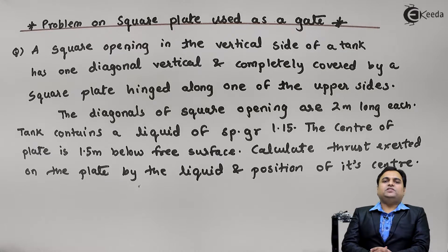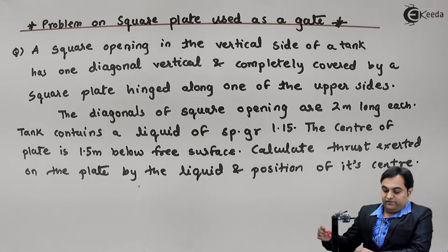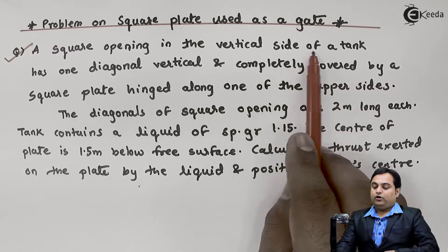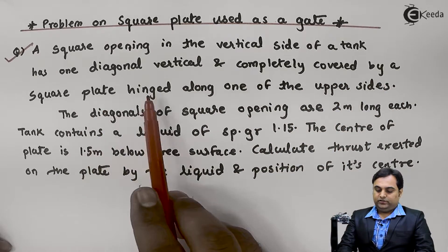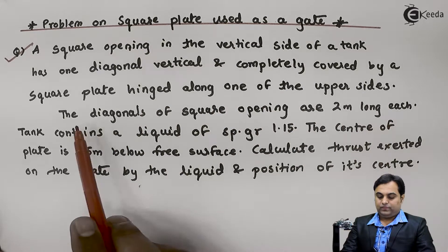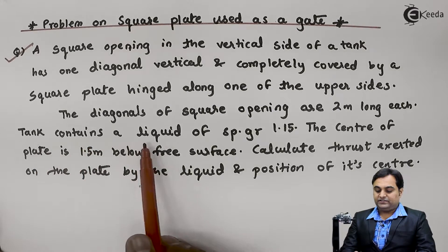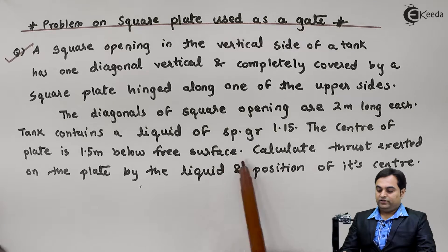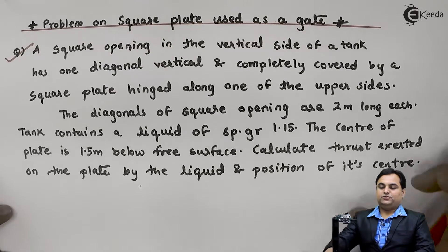Hello friends, in this video we will see a problem in which a square plate is used as a gate for a tank. A square opening in the vertical side of a tank has one diagonal vertical and is completely covered by a square plate, hinged along one of the upper sides. The diagonals of the square opening are 2 meters long each.